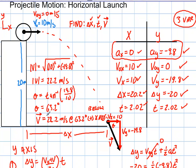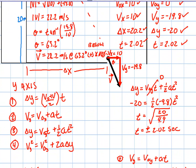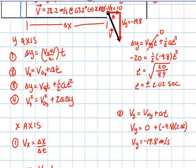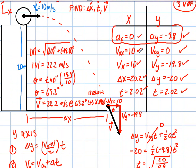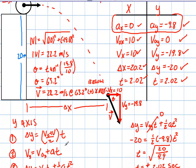We've solved for everything: delta x, time, and the final velocity. Projectile motion is really not that bad. You just need to identify your situation — here we had a horizontal launch — then make your component table and look for your three variables. Most of the time the problem gives you three variables to start. Remember your y-axis kinematics equations and the single x equation. After that, it's just a matter of going through the table, finding unknowns one at a time. Once you have four variables, you can use the first two equations to solve most things, which makes life a lot easier.